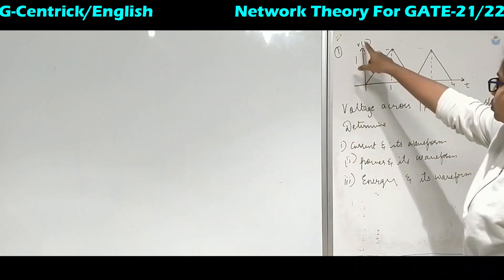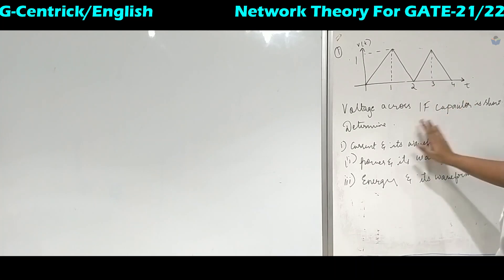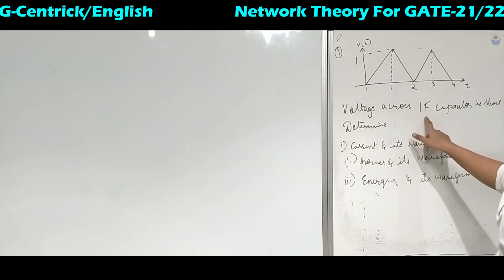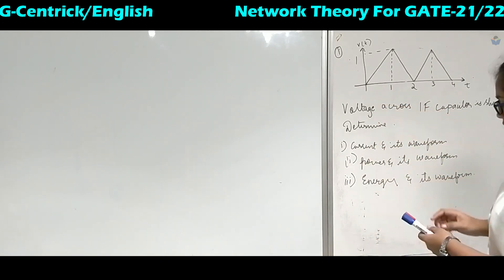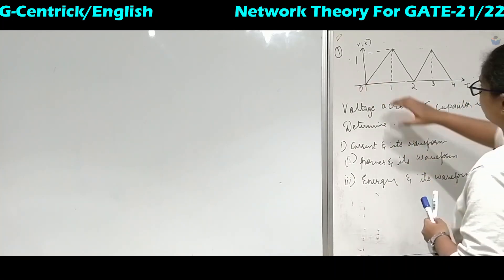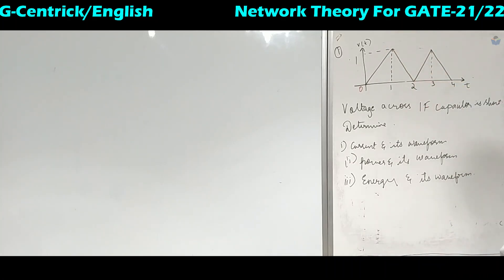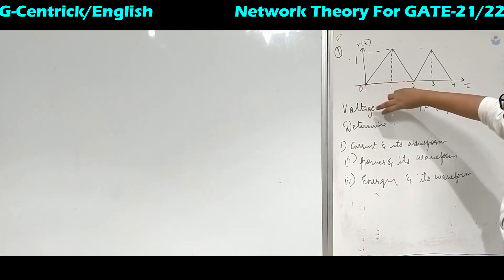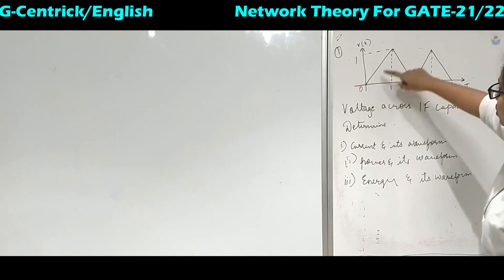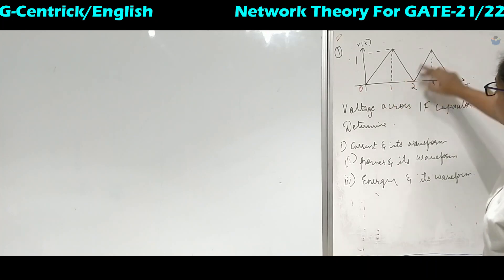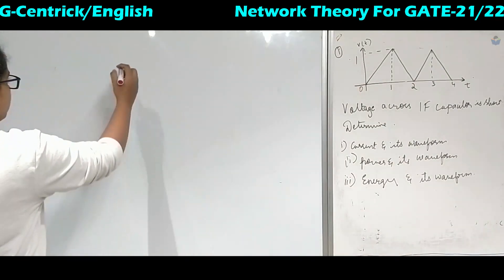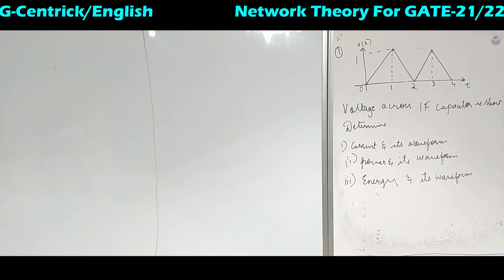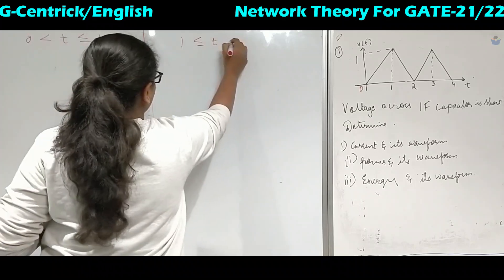We will now see a few problems on how singularity functions are helpful in solving network problems. In this question, a voltage waveform across a one-farad capacitor is shown. We have to determine the current and its waveform, power and its waveform, and energy and its waveform. From the waveform: from 0 to 1 we have a positive ramp, and from 1 to 2 we have a negative ramp. We divide the time axis into these two portions.